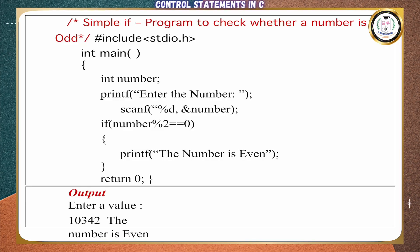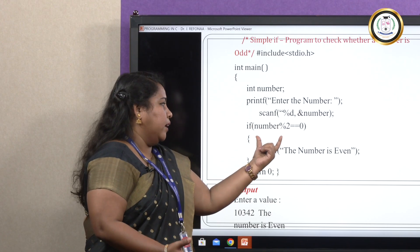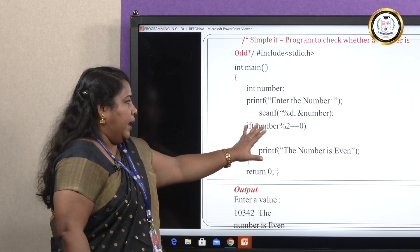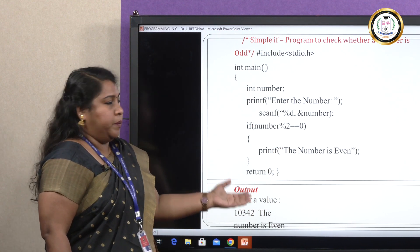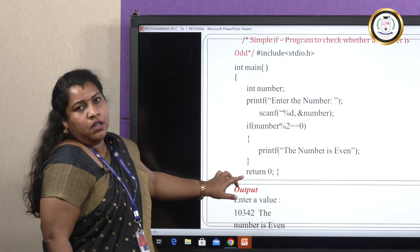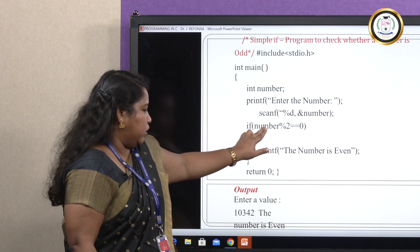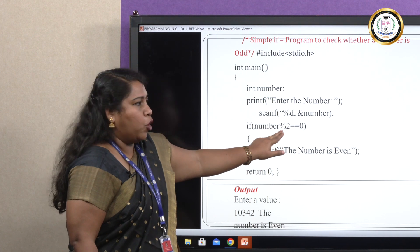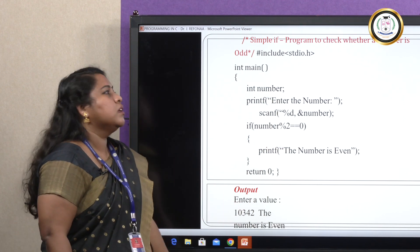Whatever input we give is stored and this condition is checked. If the condition is satisfied, the number is even; else it will come out of the if statement. Since we are using int main, we use return 0. First I am entering the value 10342. Since 10342 modulo 2 is divisible, it is printing the number as even.